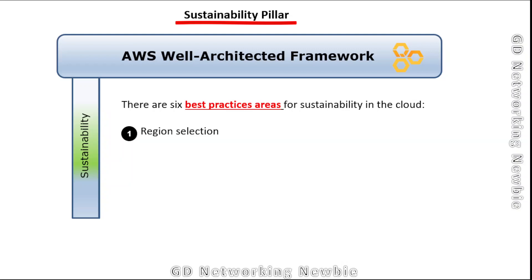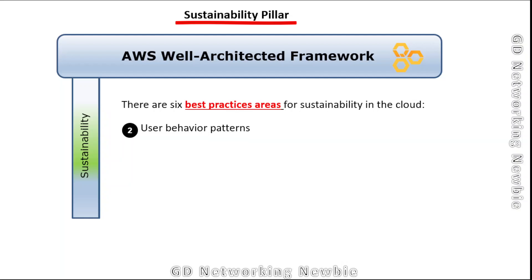The first best practice area is region selection. Try to use regions where green or alternative energy is being used, rather than fossil fuels like coal. The foundational question is: how do you select regions to support your sustainability goals? For relevant best practices, a link will be provided in the description, as this is a recently added pillar with further detail available in the AWS documentation.